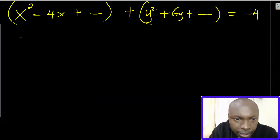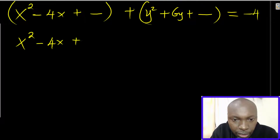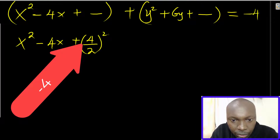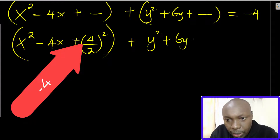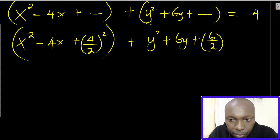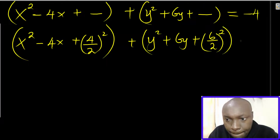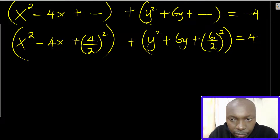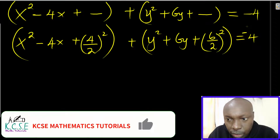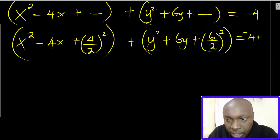To complete the square for x squared minus 4x: take half the coefficient of x — the coefficient is negative 4, so half of that is negative 2, and negative 2 squared is 4. You must add that 4 to the right-hand side. For y squared plus 6y: half the coefficient of y is 6 divided by 2, which is 3, and 3 squared is 9.